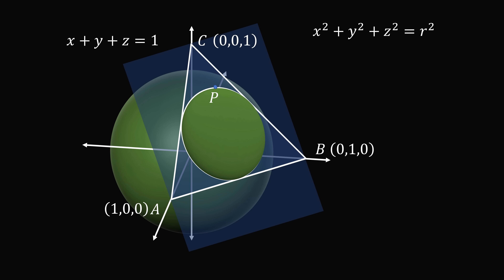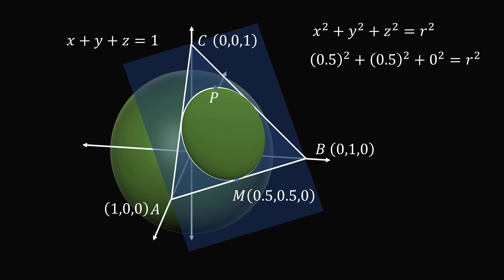In fact, we can solve for the value of R. Consider the midpoint of AB. This will be a point on the triangle, and it will also be a point on the in-circle, so it's a point on the sphere. The midpoint is the average of the coordinates of A and B, which is (0.5, 0.5, 0). Substituting into X squared plus Y squared plus Z squared equals R squared gives 0.5 squared plus 0.5 squared plus 0 squared equals R squared, which simplifies to R squared equals 0.5. So the equation of the sphere is X squared plus Y squared plus Z squared equals 0.5.